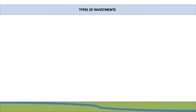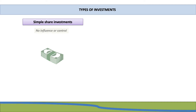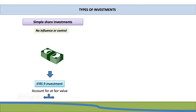We have two main types of investments that could occur when a company invests in another company. The first is a simple share investment, which occurs when an investing company has no influence or control over the company they are investing in. These investments are accounted for in terms of IFRS 9 and are known as equity investments, accounted for at fair value through profit or loss, or at fair value through OCI when the shares are not held for trading and the company irrevocably elects that option.